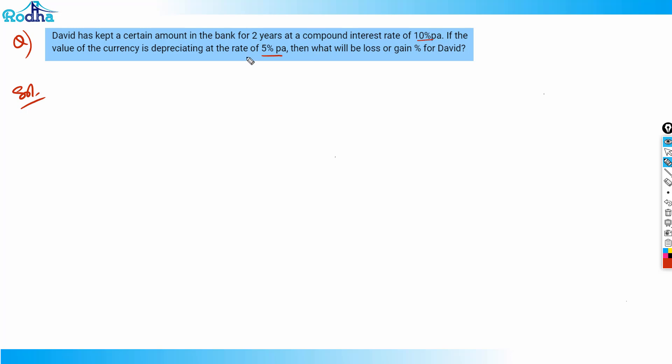The compound interest is 10% per annum and the currency is depreciating at 5% per annum. You should know that this is a successive percentage change, because this change happens one after the other.